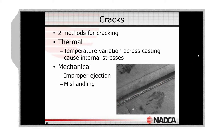There are a couple of ways you can get cracks in die casting. One is if it's caused thermally — if you have temperature variations across the casting, you're going to have internal stresses, and those internal stresses could end up pulling the casting in certain ways and causing a crack.